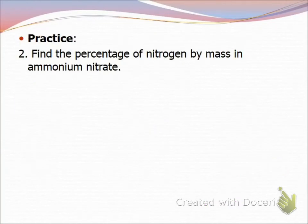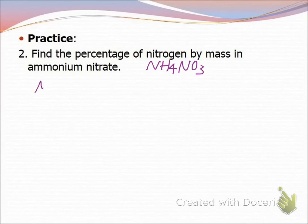This one says find the percentage of nitrogen by mass of ammonium nitrate. In this case, we are just going to be doing nitrogen. We don't have to do the whole compound. But first, I have to know how to write ammonium nitrate. It would be NH4NO3.